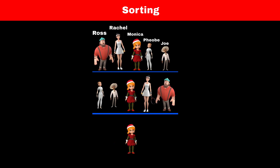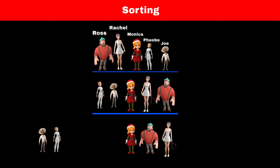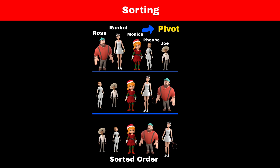We have to perform the same operation on the right side and left side of Monica. Again, students on the right side will select one person and sort themselves according to it, and the same thing will happen on the left side. The person or element which is selected for sorting is called the pivot, and we are partitioning our array according to that pivot element. This means we are dividing the array and then sorting it — we are using divide and conquer strategy. This type of sorting algorithm is called quicksort.